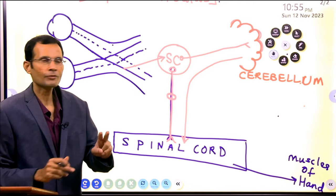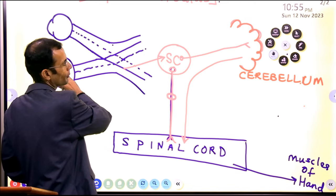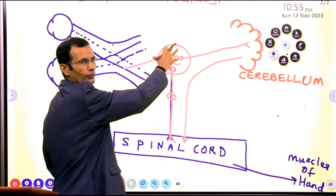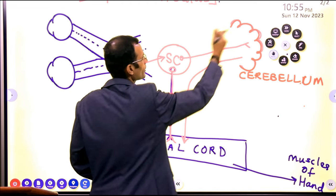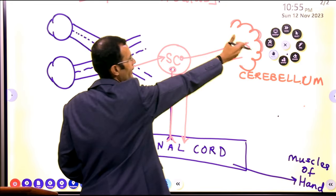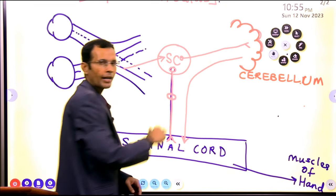I'll just quickly recap it once again. Vision, visual pathway, sending signals to superior colliculus, part of the tectum and superior colliculus sending the signals to the cerebellum, tectocerebellar tract.